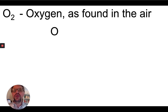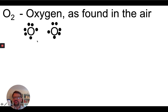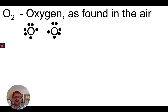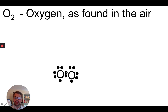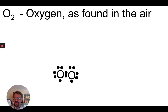Next is O₂ — oxygen in the atmosphere exists in this form. We have two oxygen atoms, each with six valence electrons, and they want an octet. Oxygen likes to bond with things, including with itself. Starting with a single bond between the two oxygens, we have two electrons shared. However, neither oxygen has an octet — the left oxygen has seven electrons and the right oxygen also has seven. That doesn't work; the atoms won't be stable.